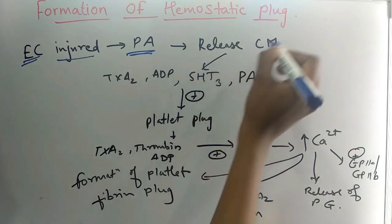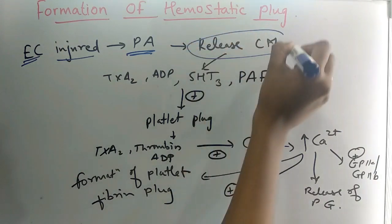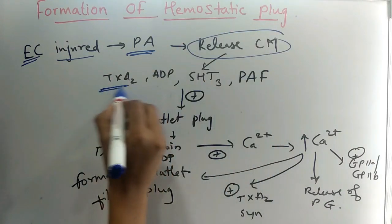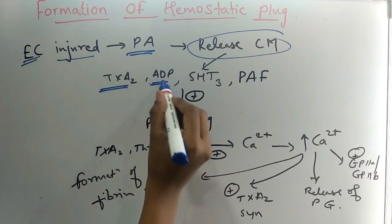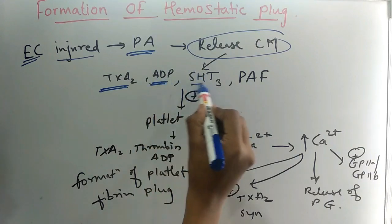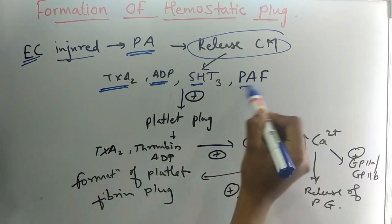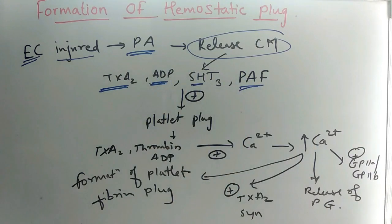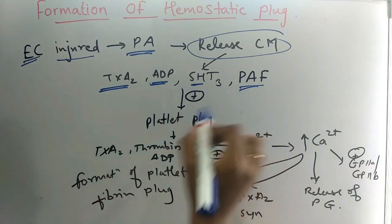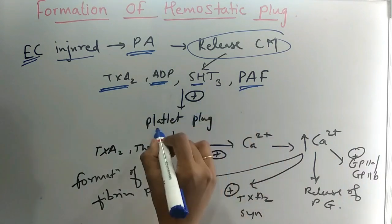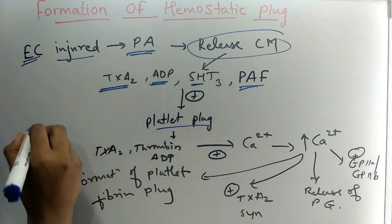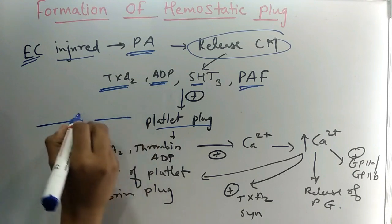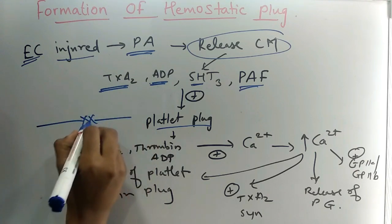The platelet aggregates release chemical mediators: thromboxane A2, adenosine diphosphate (ADP), serotonin, and platelet activation factor. All of these stimulate the formation of a platelet plug.